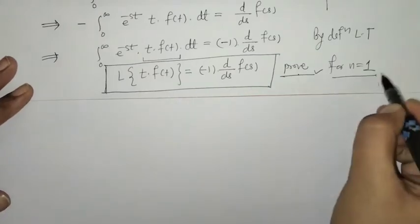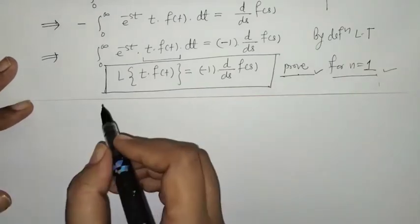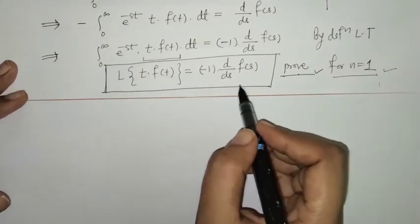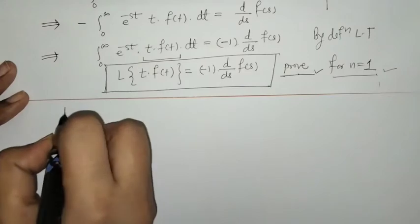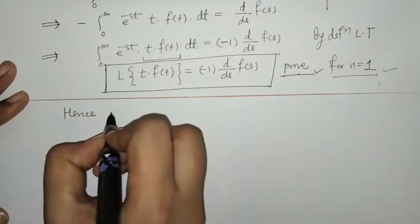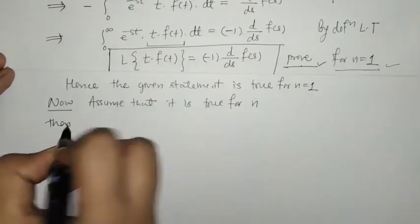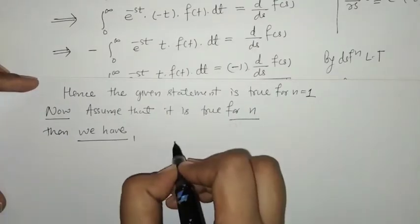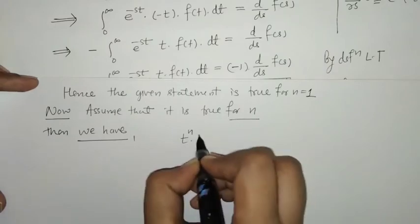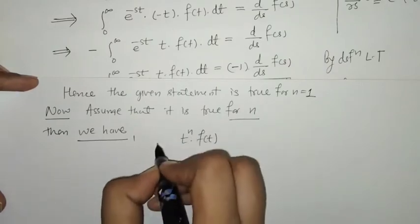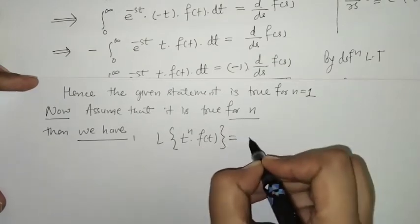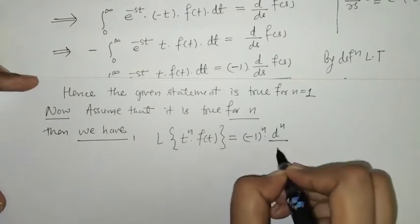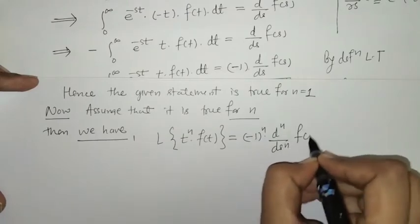We have proved the statement for n equals 1. Next, we assume that the given statement is true for n — that is, we assume the Laplace of t raised to n times f(t) equals (-1)^n times the nth differentiation of F(s) with respect to s.